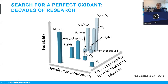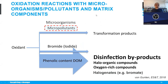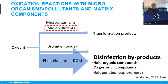With ozone and hydroxyl radical oxidation, the primary goal is to disinfect water, targeting microorganisms and micropollutants. Micropollutants are transformed into transformation products, but these oxidants also react with the matrix — with bromide and iodide, but also phenolic substances in dissolved organic matter — leading to undesired disinfection byproducts, including halogenated compounds such as chlorinated and brominated products, as well as oxygen-rich compounds such as aldehydes and ketones.